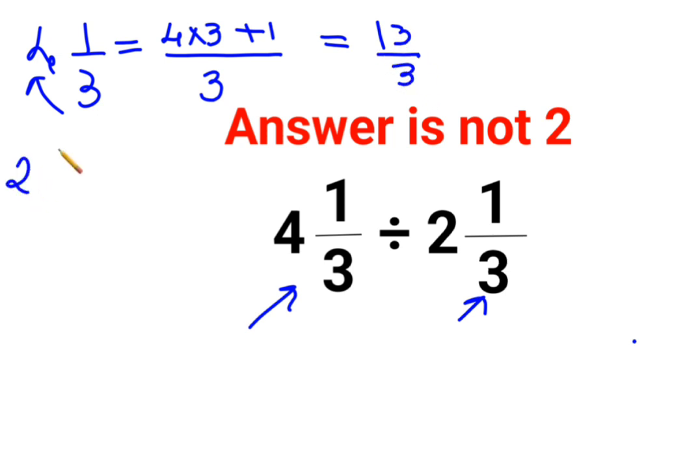Similarly, 2, 1 by 3. The answer for this one would be what? Denominator continues to remain same. 2 gets multiplied by 3 plus 1. So answer is 7 upon 3.